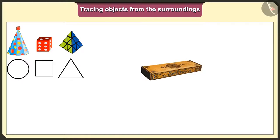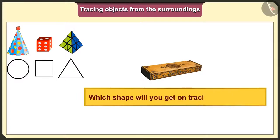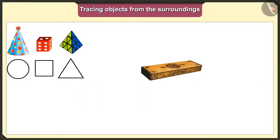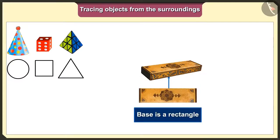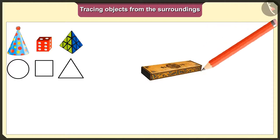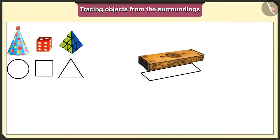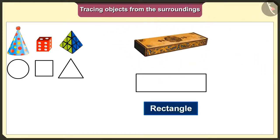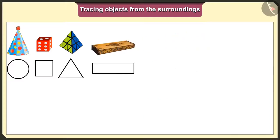Friends, can you all guess which shape we would get when we trace this pencil box? Let us trace this pencil box too. The base of pencil box is rectangle. So, we will get rectangle shape when we put it on paper and trace it.